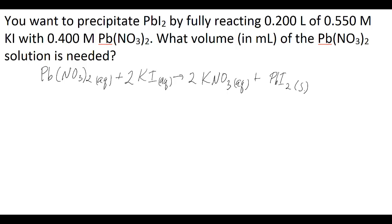To answer this question, you want to know what volume of lead nitrate is needed, given its known concentration, to react fully with the known volume and known molarity of potassium iodide. As always, when looking at a balanced chemical equation, you want to relate the two reactants using reaction stoichiometry. For every one mole of lead nitrate, you have two moles of potassium iodide.